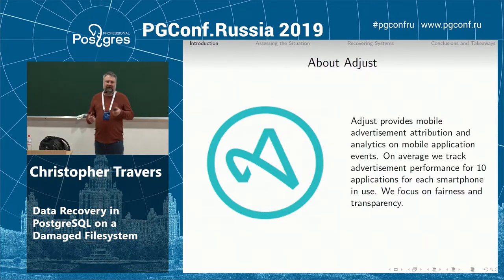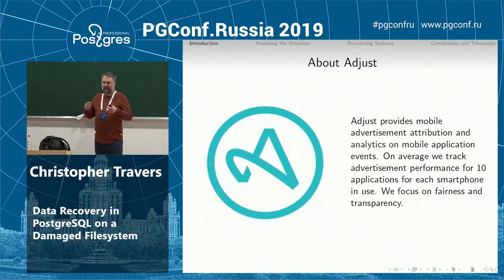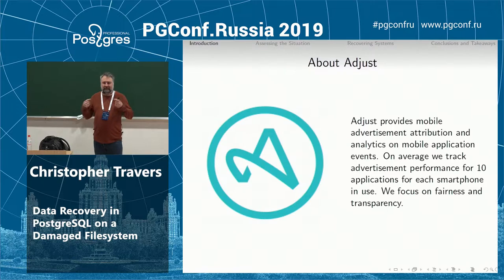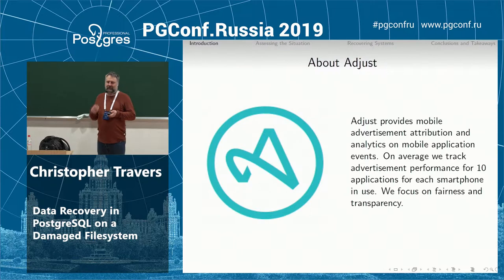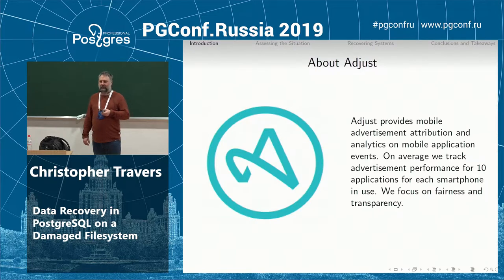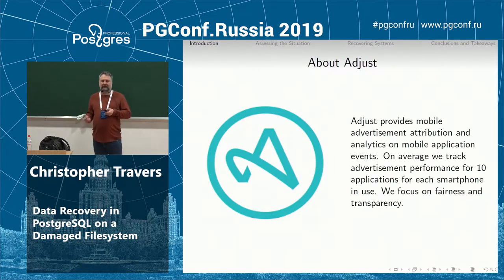We do basically attribution of advertising events — we say this advertising event gets credit for this installation. We get a very large amount of data and have to process it. Our databases tend to be under reasonably heavy load. We process 100 to 300,000 transactions a second across our entire environment on the analytics side, and we have other components that do twice that.